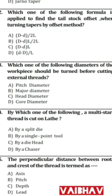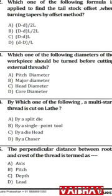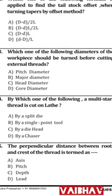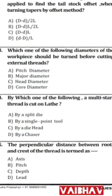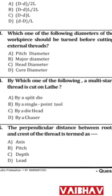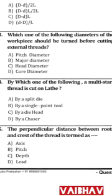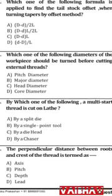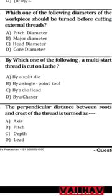Question 3: Which one of the following diameters of work should be turned before cutting external threads? The answer is B — major diameter. Before cutting external threads, the work should be turned to the major diameter.